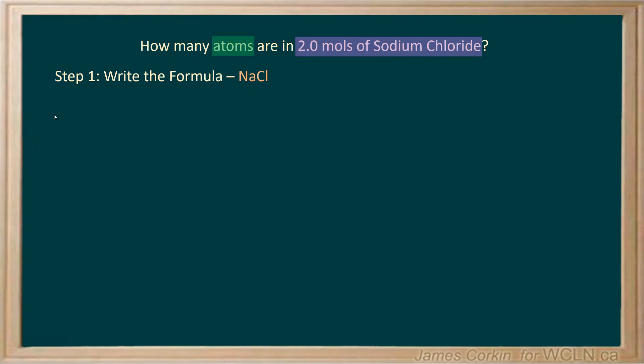First, you need to be able to take a name of a compound and turn it into a formula. In this case, both sodium and chlorine have charges of 1, plus 1 for sodium, minus 1 for chlorine. So the formula is NaCl.